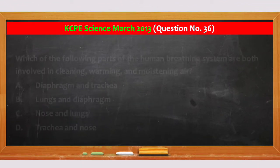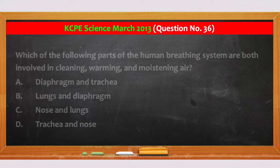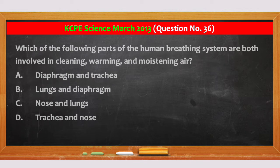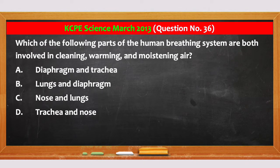Which of the following parts of the human breathing system are both involved in cleaning, warming, and moistening air? A. Diaphragm and trachea. B. Lungs and diaphragm. C. Nose and lungs. And D. Trachea and nose.